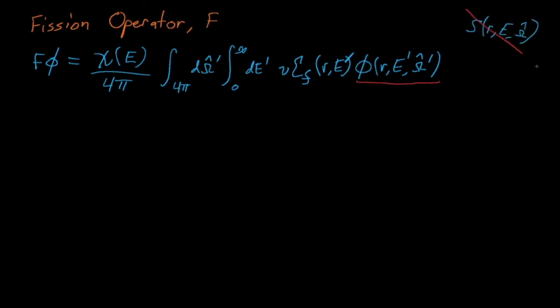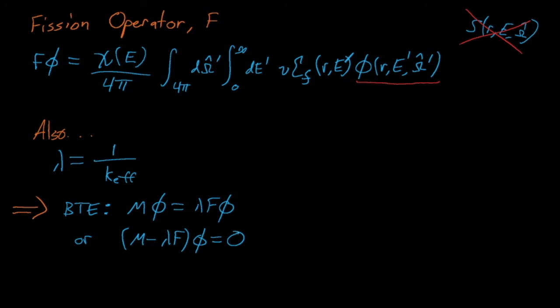The last term in the Boltzmann transport equation is this lowercase λ, which is simply equal to 1 over the eigenvalue for our system. Now through the power of this operator notation, the Boltzmann transport equation can be written more easily and much more conveniently as Mφ = λFφ, or alternatively, (M - λF)φ = 0.